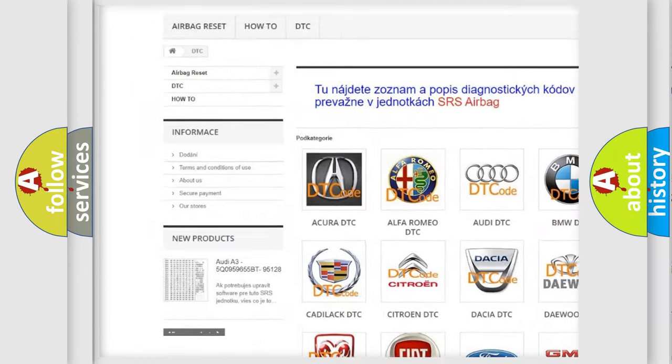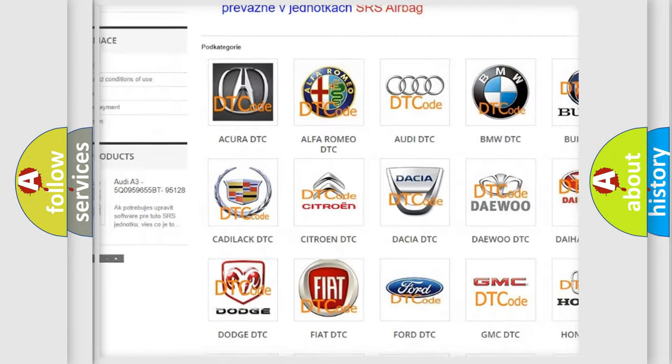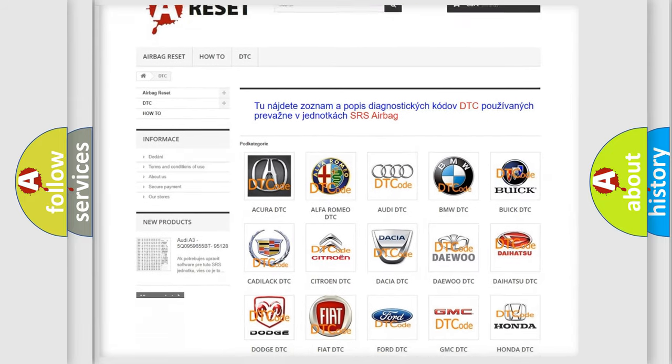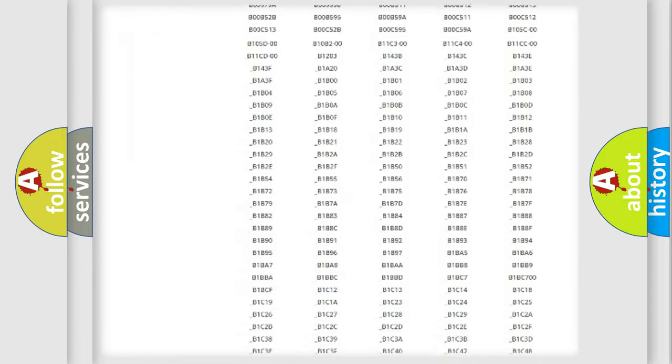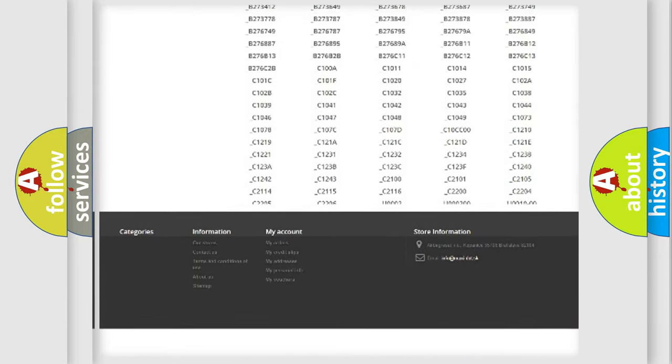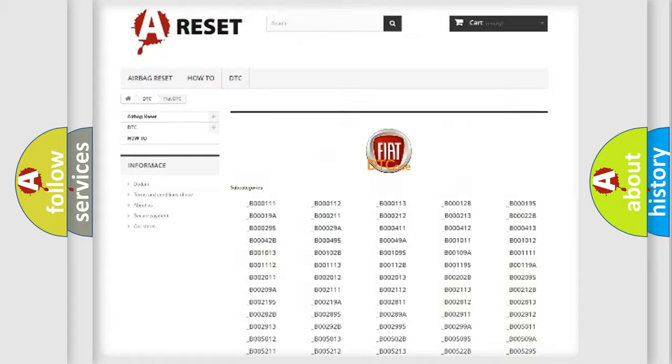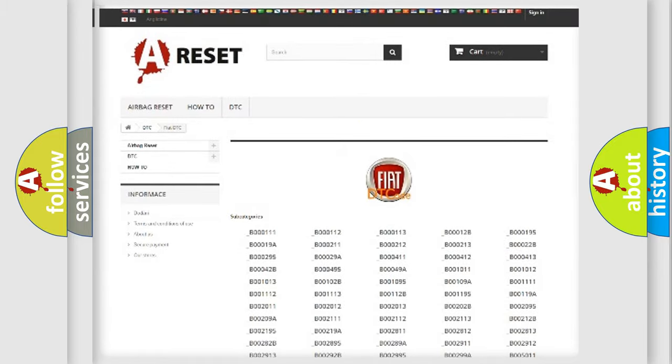Our website airbagreset.sk produces useful videos for you. You do not have to go through the OBD2 protocol anymore to know how to troubleshoot any car breakdown. You will find all the diagnostic codes that can be diagnosed in Fiat vehicles, and many other useful things.